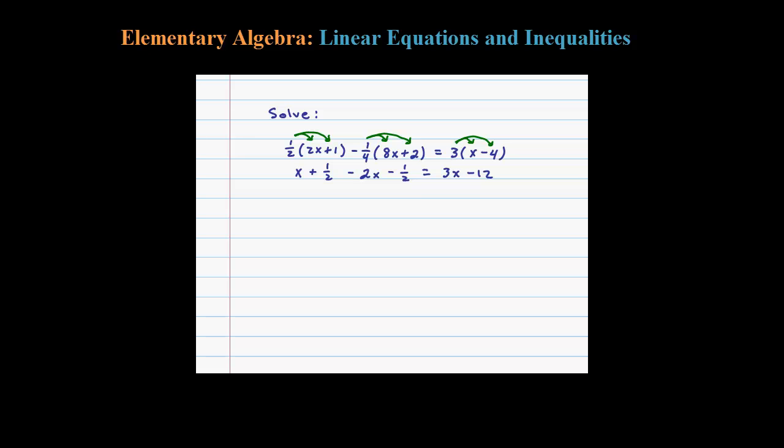We got kind of lucky here. Notice that we have same-side like terms: plus one-half and minus one-half. Well, they add to zero, so x minus 2x is leaving me here with negative x.